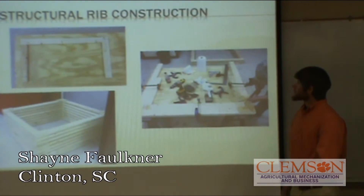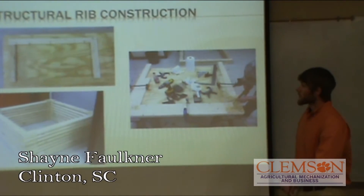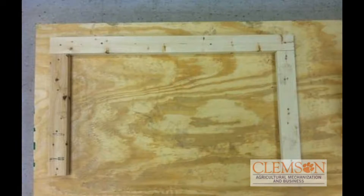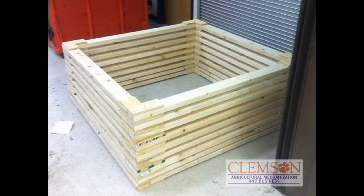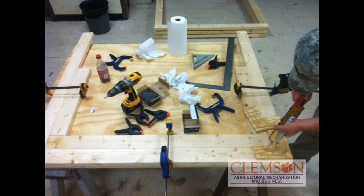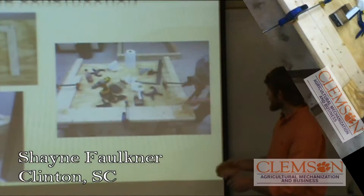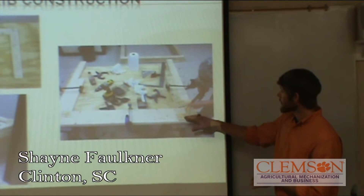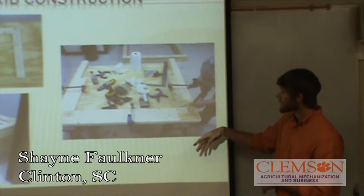We started first with building the ribs. This is a jig that we set up. We checked and double-checked to make sure the outside angles were square. Then we came in with our pre-cut two-by-fours, clamped them in to ensure the inside angle was square, and then took these gussets, applied liquid nail, and screwed them in.